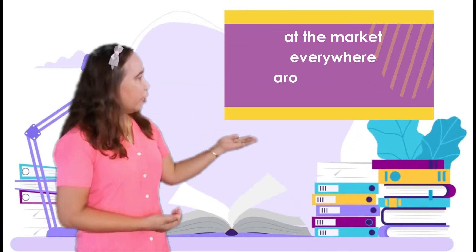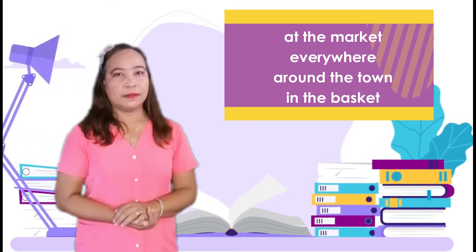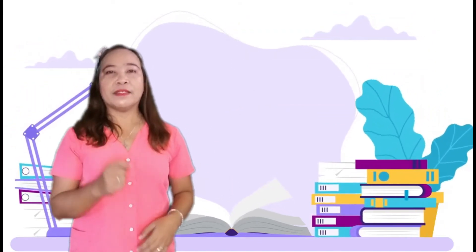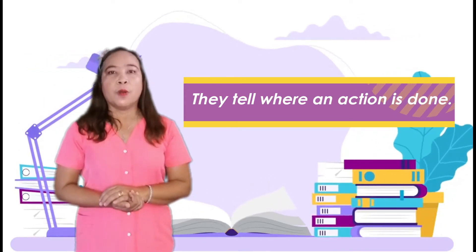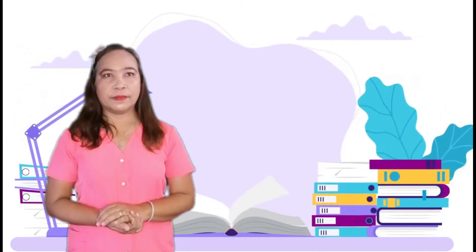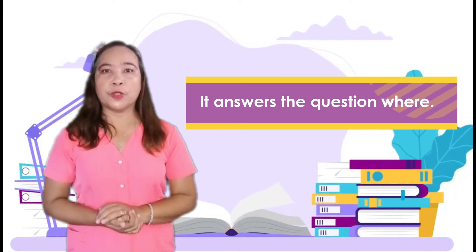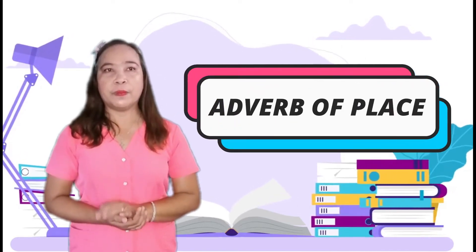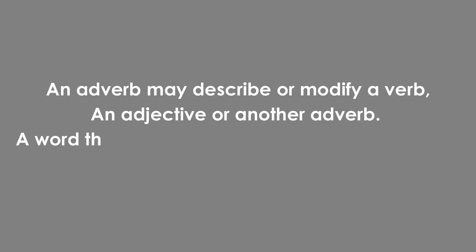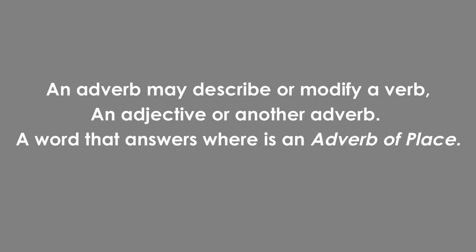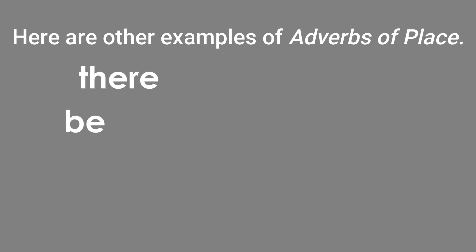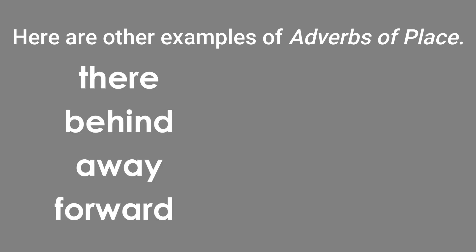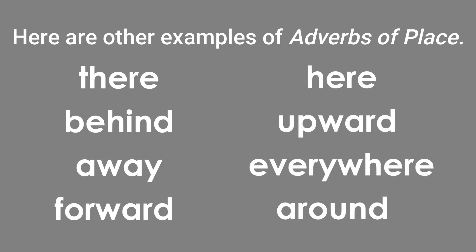Kids, look at the underlined words. What do these words tell? That's right — they tell where an action is done. What question do these words answer? It answers the question where. A word that tells where an action is done is an adverb of place. An adverb may describe or modify a verb, an adjective, or another adverb. A word that answers where is an adverb of place. Here are other examples of adverbs of place: there, behind, away, forward, here, upward, everywhere, around.